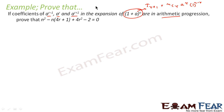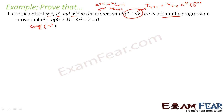Similarly, for a to the power r minus 1, the coefficient will be nC(r minus 1), and for a to the power r plus 1, the coefficient will be nC(r plus 1). So it is given that the coefficient of a to the power (r minus 1) plus coefficient of a to the power (r plus 1) is equal to 2 times the coefficient of a to the power r.